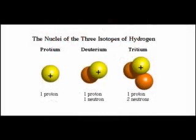Hydrogen is the first element in the periodic table, with one proton. Although all hydrogen atoms have one proton in the nucleus, some have one or two neutrons as well. Hydrogen with just one proton and no neutron is by far the most common isotope. Hydrogen with one neutron is called deuterium, and hydrogen with two neutrons is called tritium. Tritium is an unstable, radioactive isotope of hydrogen.